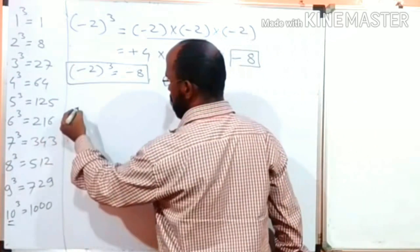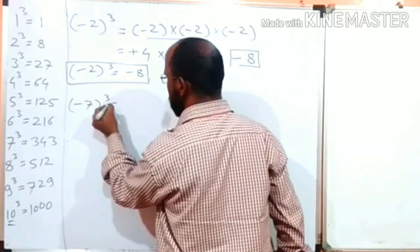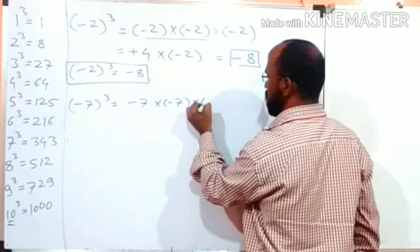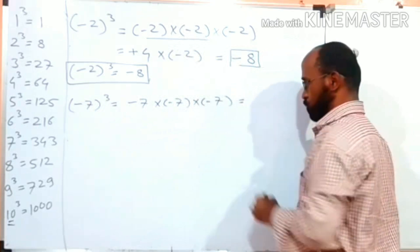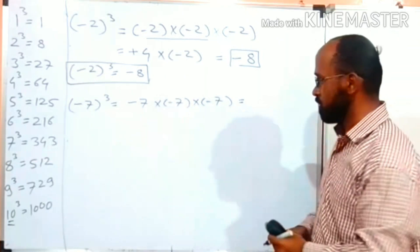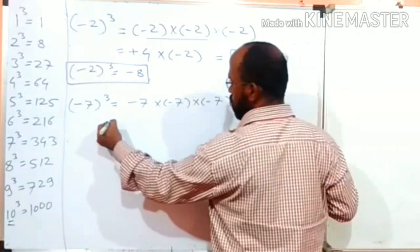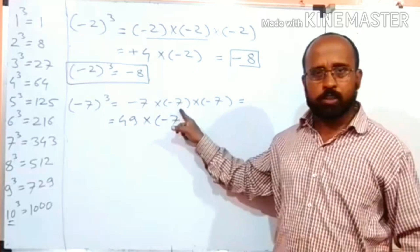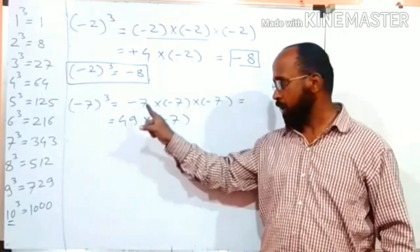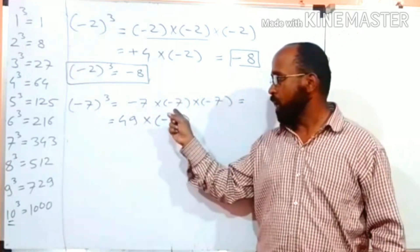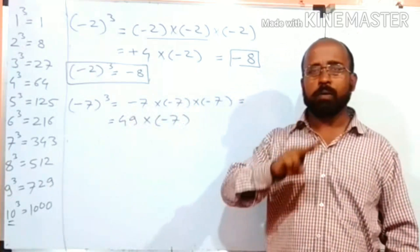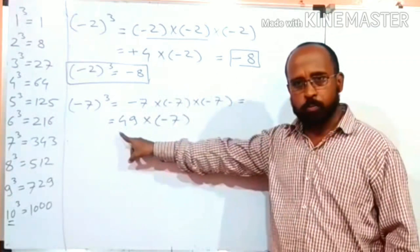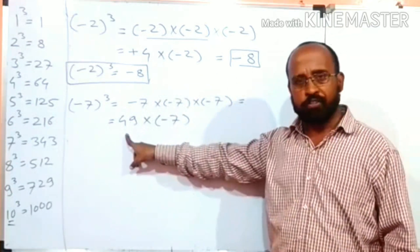Now, cube of minus 7. Minus 7 cubed is equal to minus 7 multiplied by minus 7 multiplied by minus 7. Which is equal to: minus 7 into minus 7, first. 7 sevens are 49. Minus times minus is plus. We are multiplying two numbers — if the symbol of both numbers is the same, the symbol of the answer is positive. So the answer is positive 49.